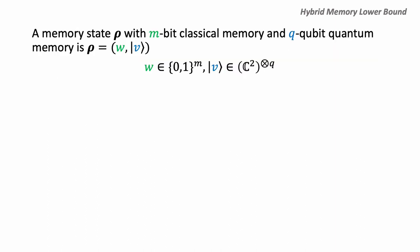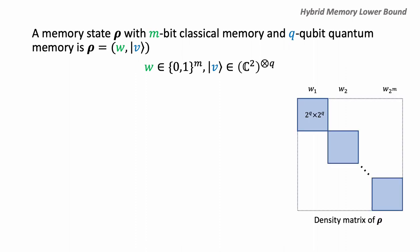Let me give slightly more detail about the model we consider. We consider a learning algorithm working with an m-bit classical and q-qubit quantum memory state rho. This state describes the whole system — the whole state of the learning algorithm — and can be seen as a tuple (w, v), where w is an m-bit classical string and v is a q-qubit quantum state. More formally, we can view this as a whole: the density matrix of the whole system rho is a block matrix, and this block captures the classicalness for the w-register.